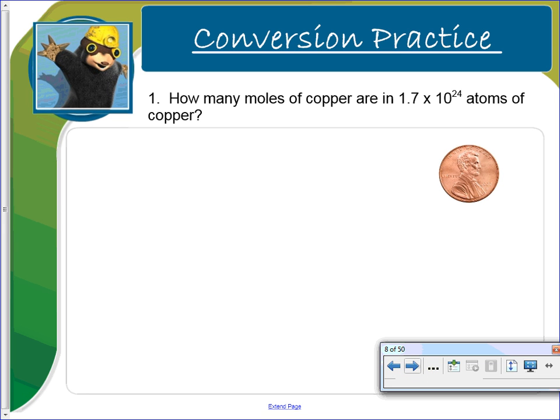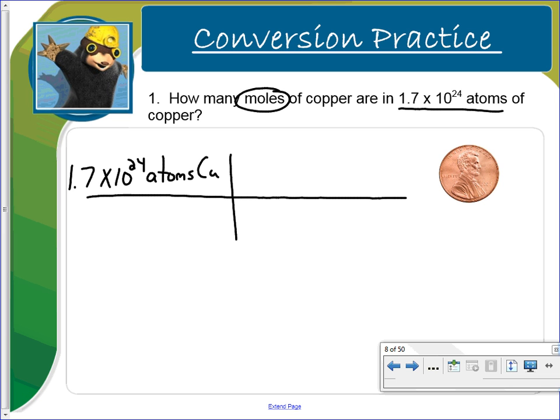So let's work some problems. So like I said, you should have your periodic table, you should have a sheet of paper, and you should have a calculator. And guess what? We get to go back and use our dimensional analysis skills that we learned at the beginning of the school year. So this is how many moles of copper are in 1.7 times 10 to the 24th atoms of copper. So we need to write down our given 1.7 times 10 to the 24th atoms of copper. And since we're going to want to count all atoms, it's going to go on bottom.